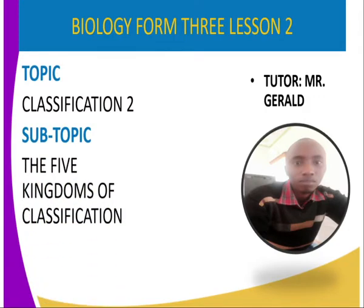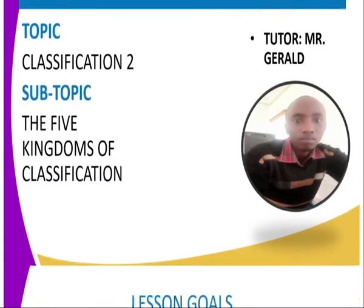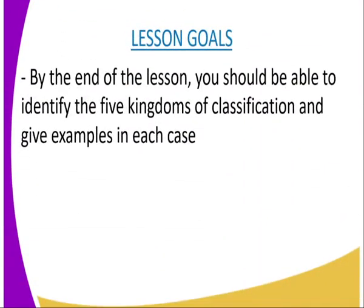Remember there are normally 5 kingdoms which are used to classify organisms, so those are the ones that we are going to look at in this lesson. But before we get into the lesson, we can have the following lesson goals: by the end of the lesson you should be able to identify the 5 kingdoms of classification, and you should also be in a position to give examples in each case.